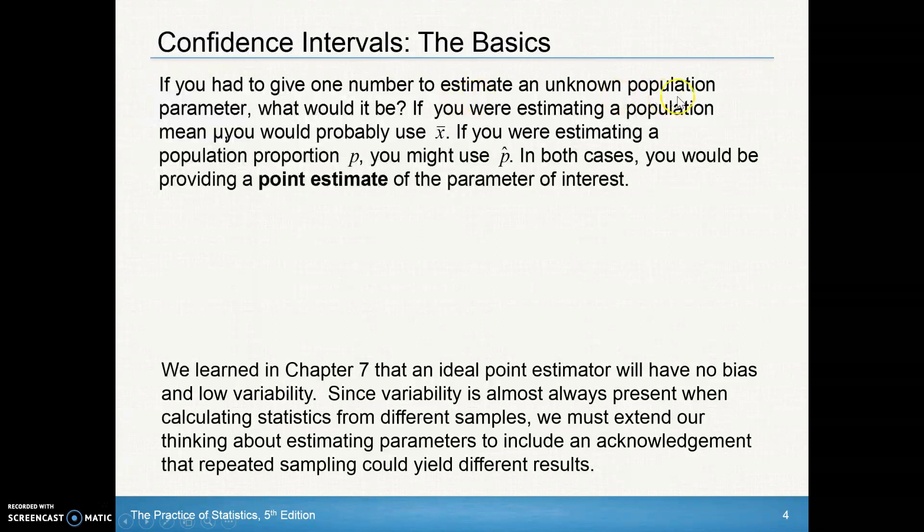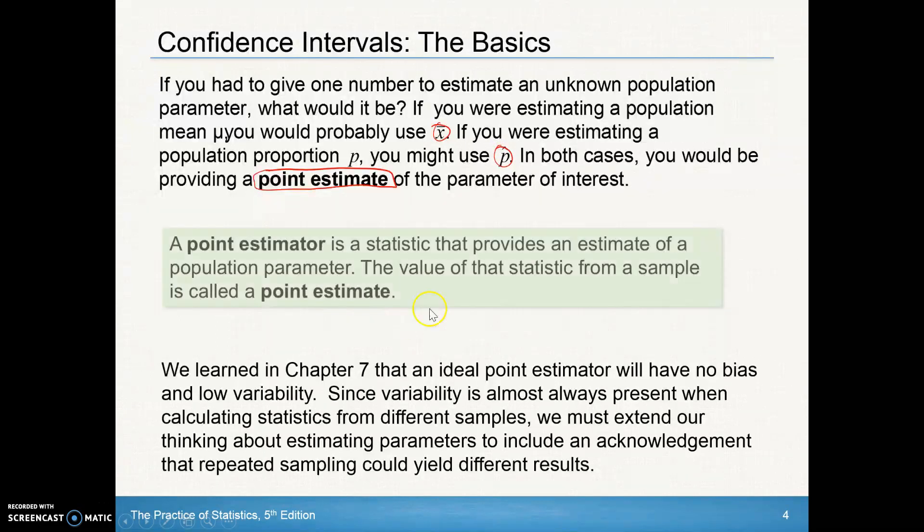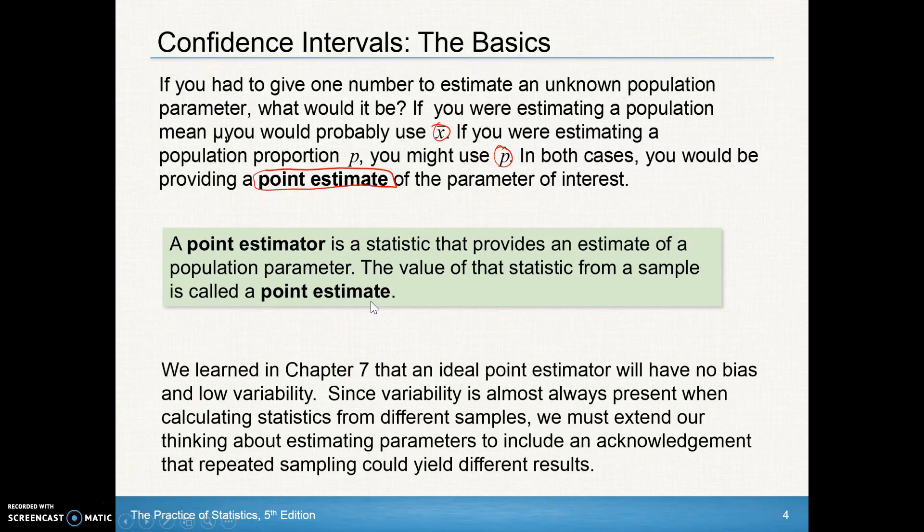Well, in both cases, you're providing a point estimate. The point estimate is your x-bar or your p-hat on the parameter of interest. A point estimator is a statistic that provides an estimate of a population parameter, and that's what we're doing. We're using this x-bar to estimate the mu. We're using the p-hat to estimate our p. The value of that statistic from a sample is called the point estimate. The point estimator is the variable we're using. The point estimate is the actual number that we would get.